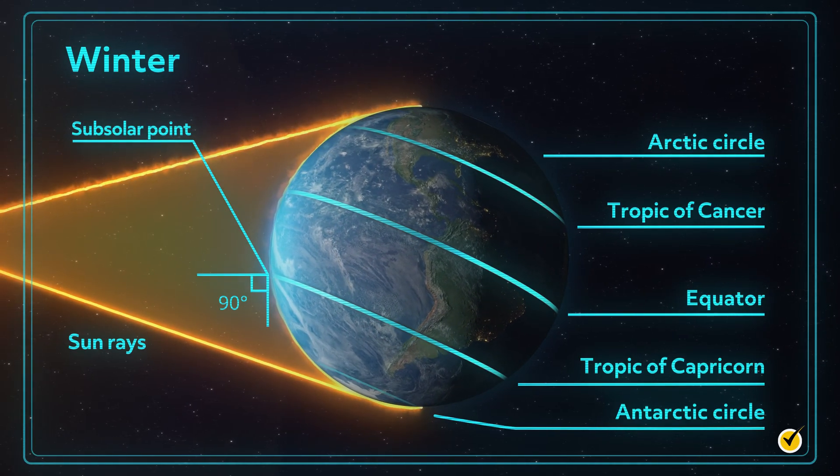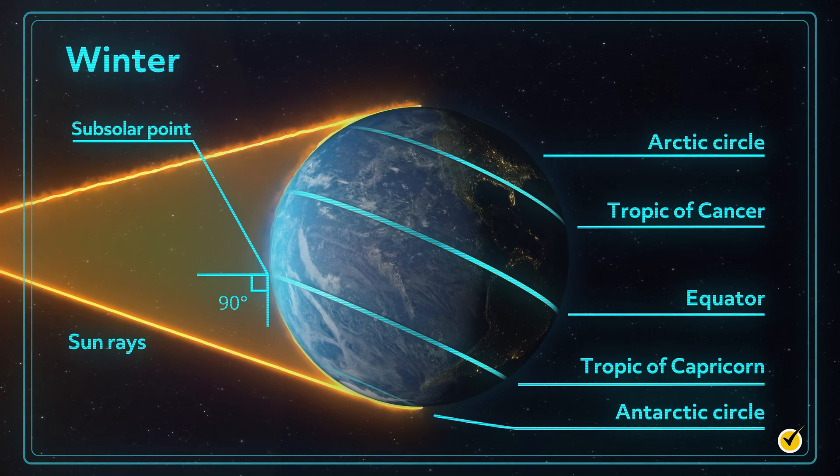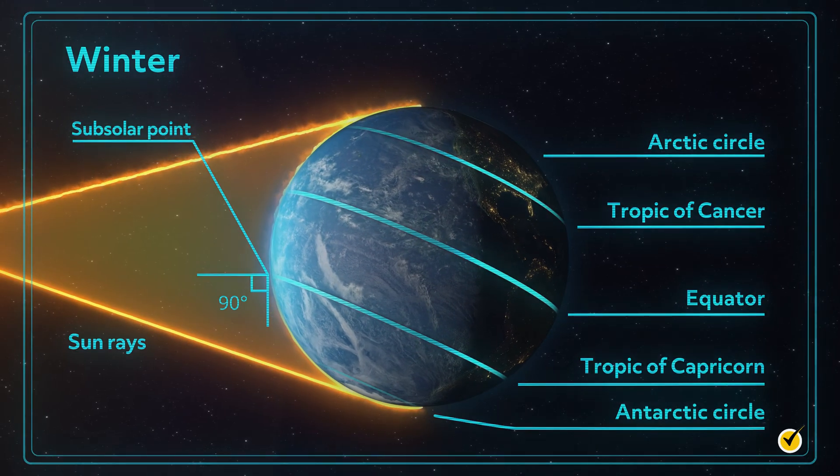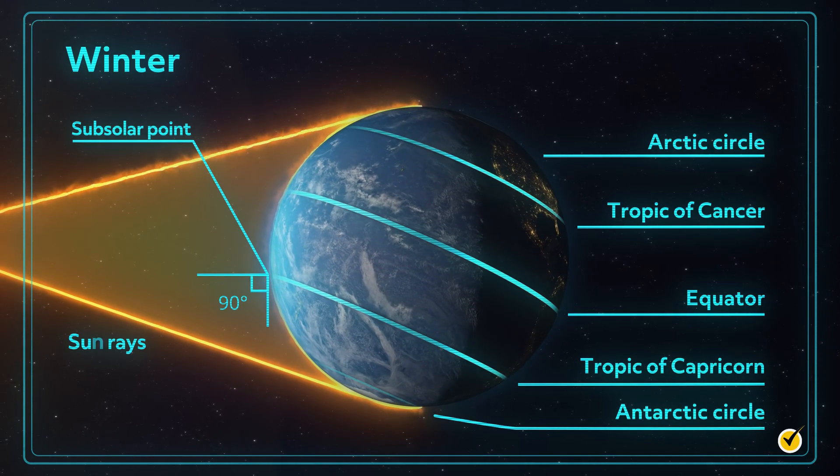While the most concentrated direct sunlight is hitting the southern hemisphere, the northern hemisphere is experiencing the colder temperatures of its winter season, as the southern hemisphere enjoys the warmth of summer.